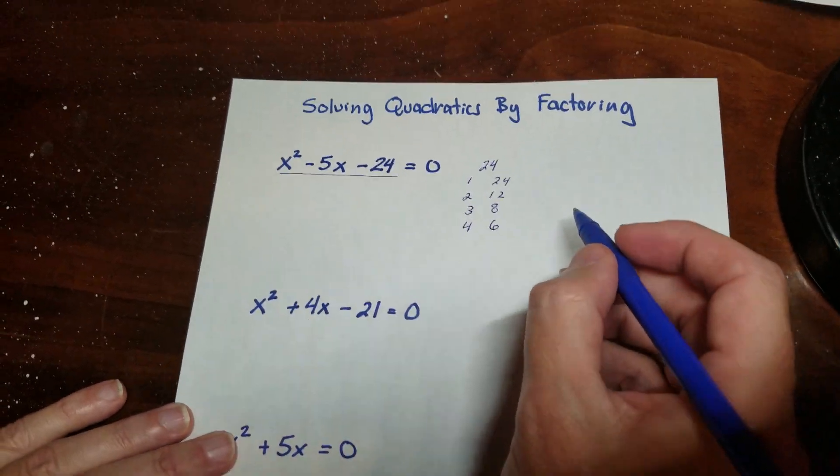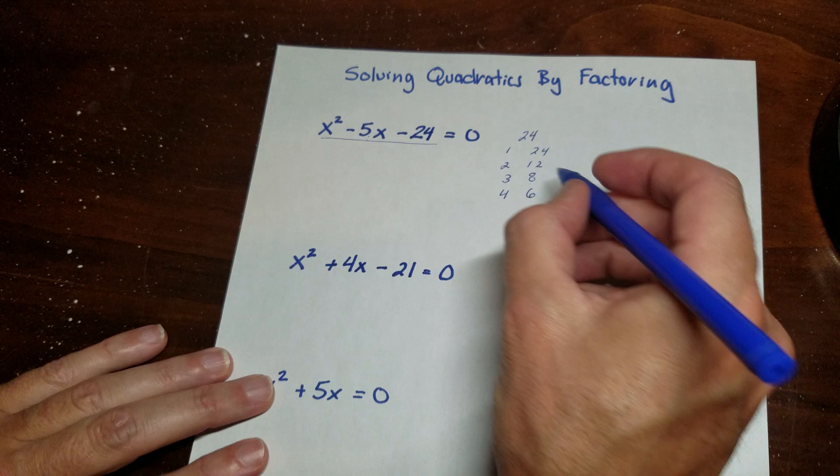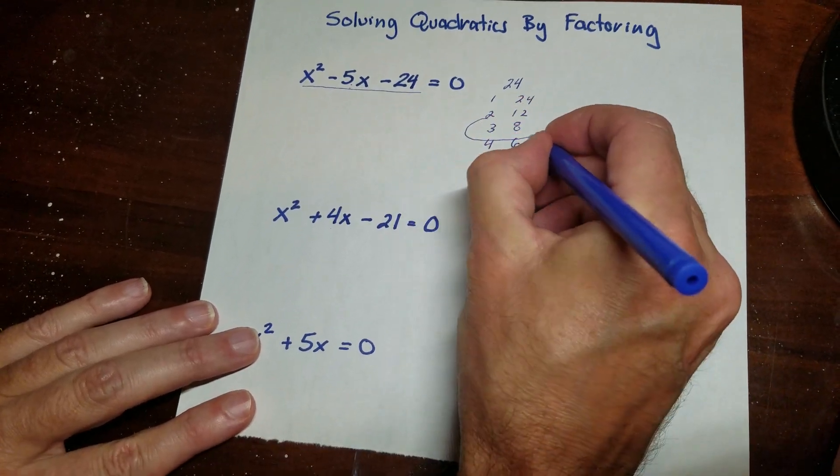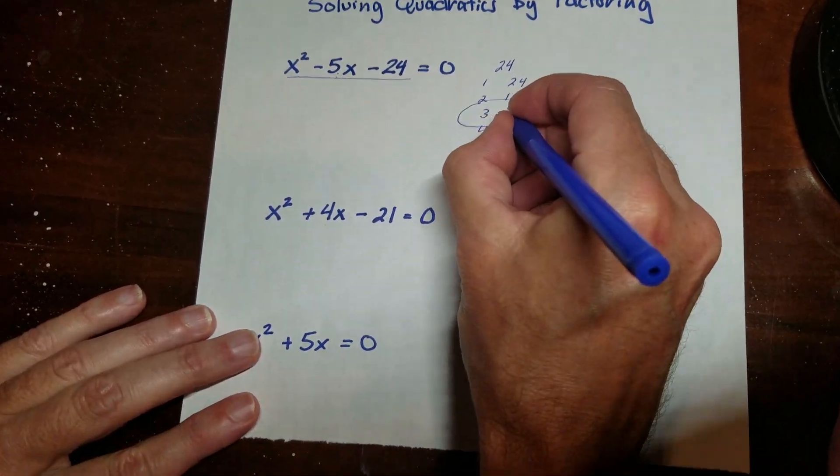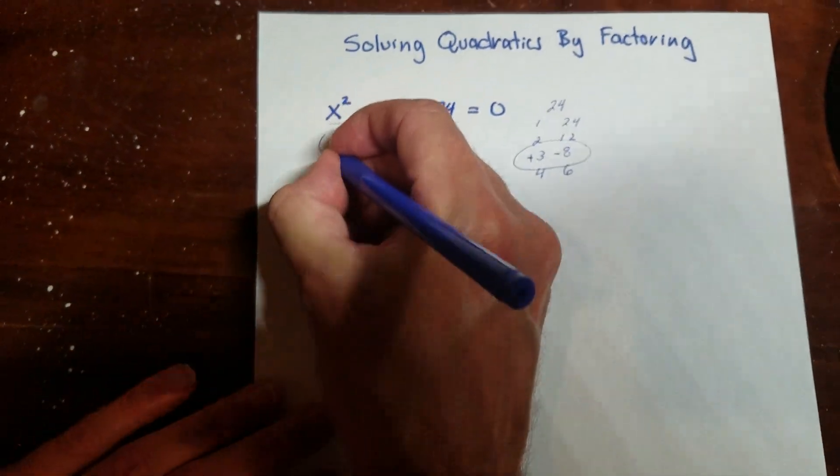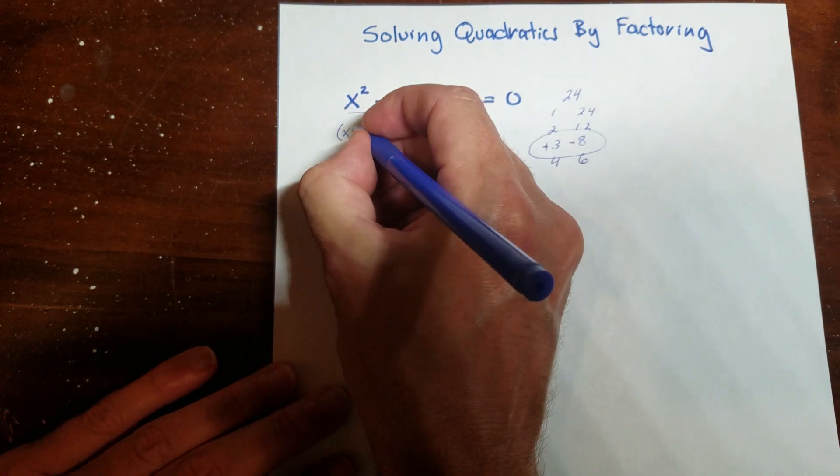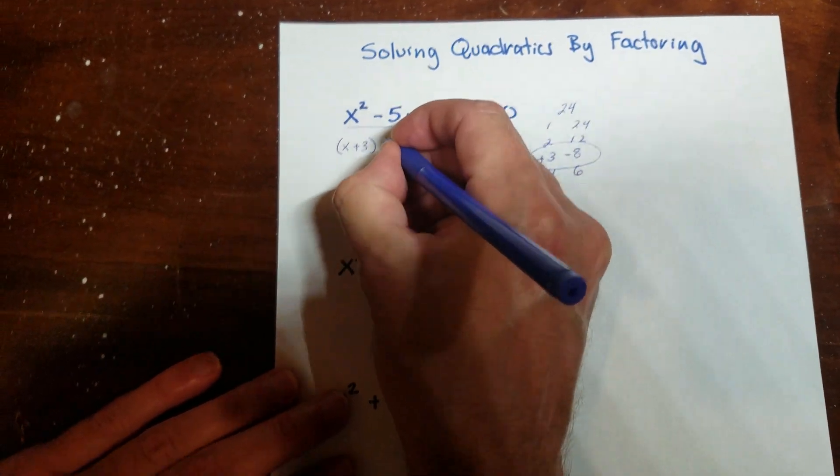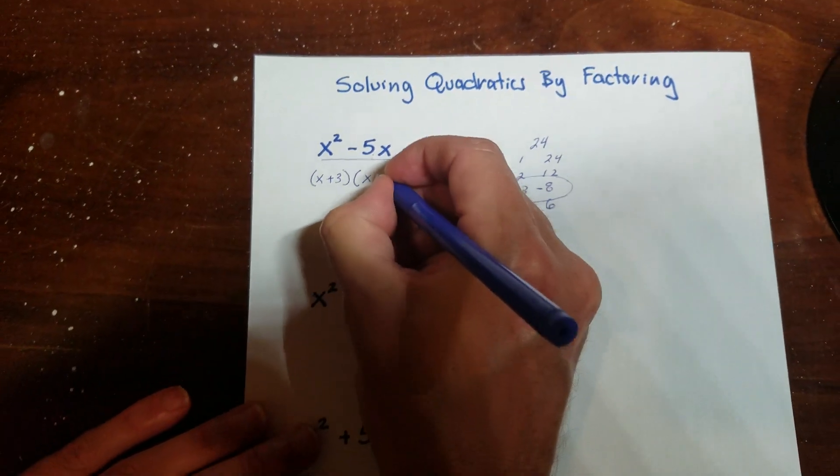So I have to find out which pair is going to give me a negative 5. So I'm going to select the 8 and the 3. So it's a negative 8 and a positive 3. So I know that it's x plus 3 times x minus 8.